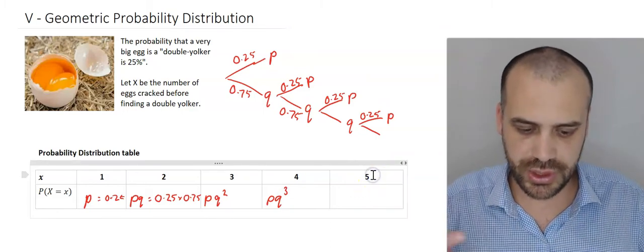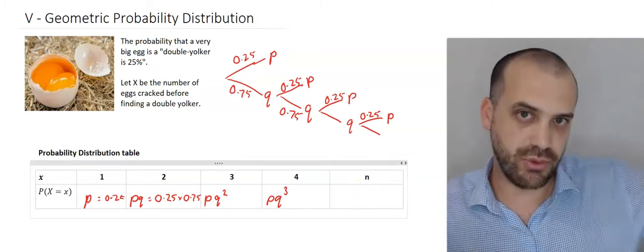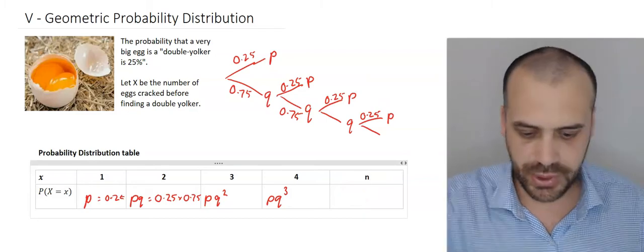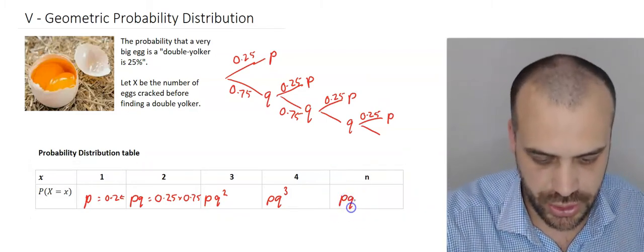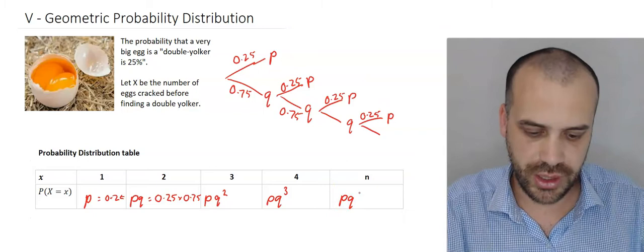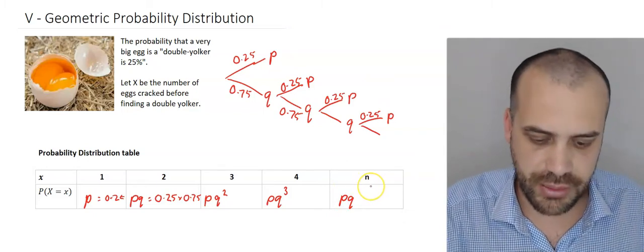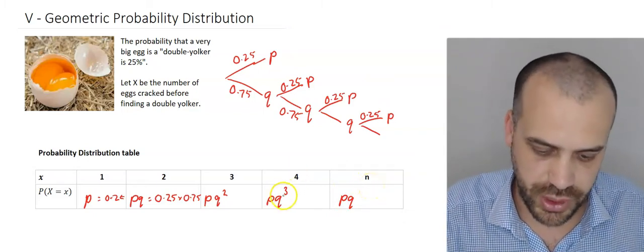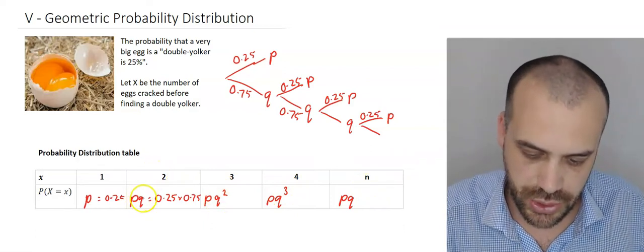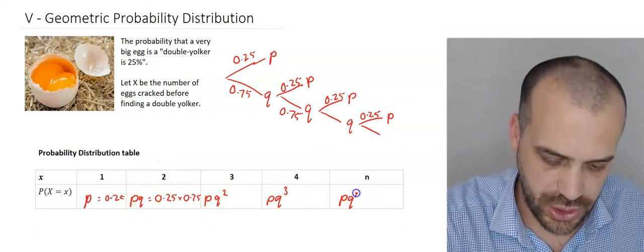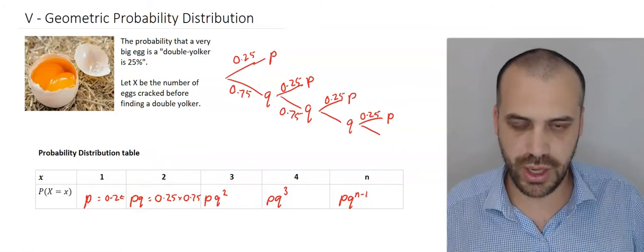What if it wasn't the number 5? What if it was just some random number N? That's going to be P times Q to the power of not N, but N minus 1. Because when it was 4, it was 3. When it was 3, it was 2. When it was 2, it was Q to the power of 1. So it's P times Q to the N minus 1.